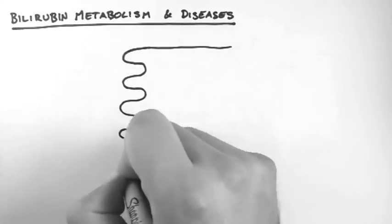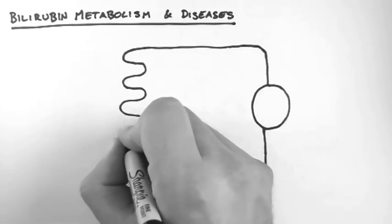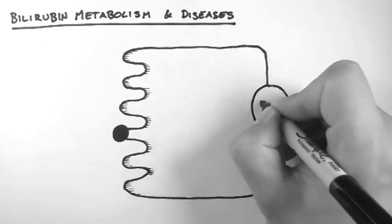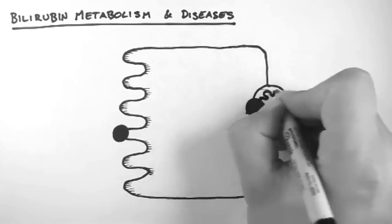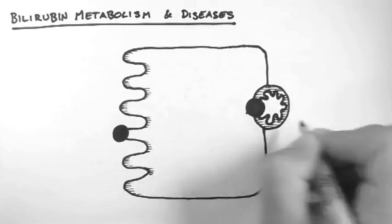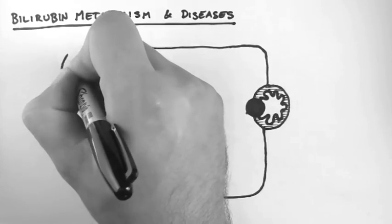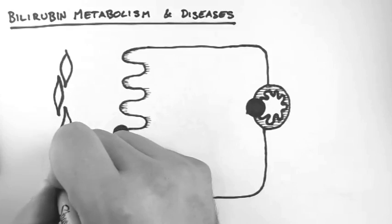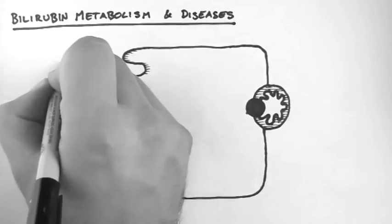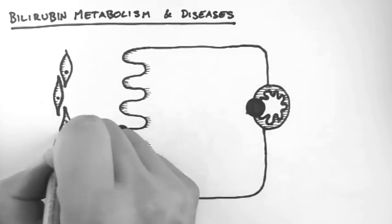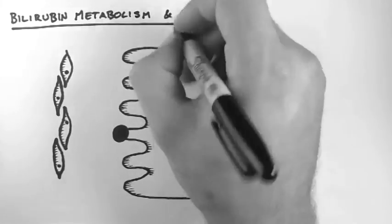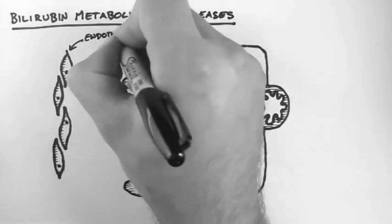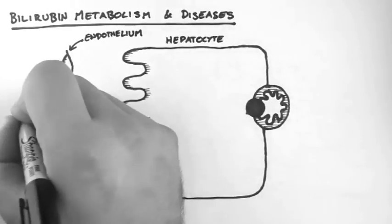So first of all I'm going to draw a hepatocyte which is the main functional cell of the liver. And here I'm going to draw the endothelial lining of the liver sinusoids. Remember that endothelium is the type of cell that makes up blood vessel walls. But the walls of the sinusoid are more porous and in this way they allow proteins such as albumin to pass through the vessel walls.